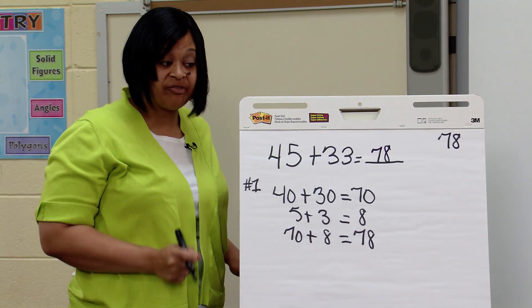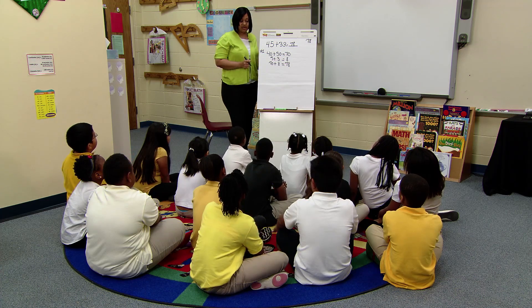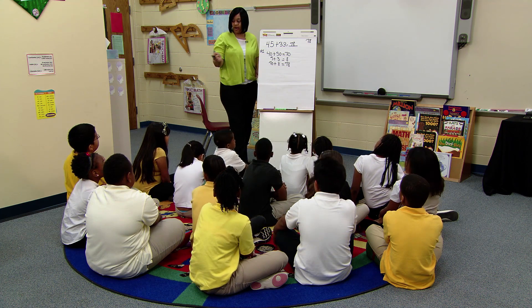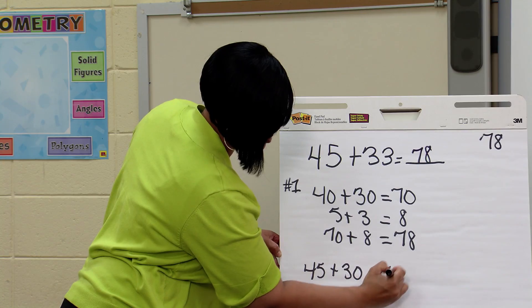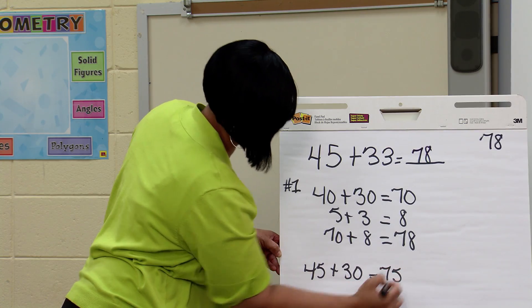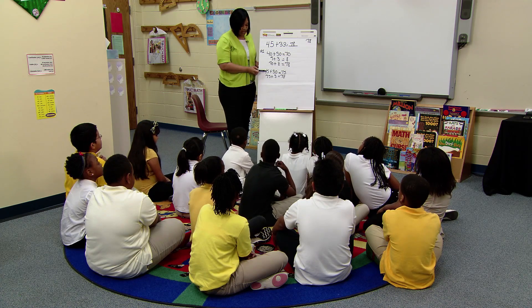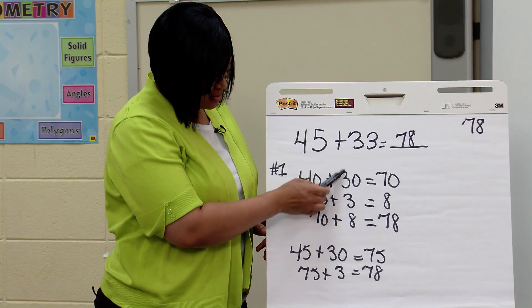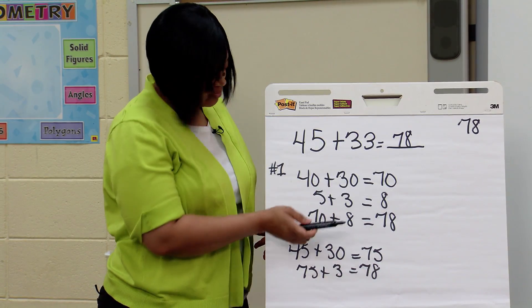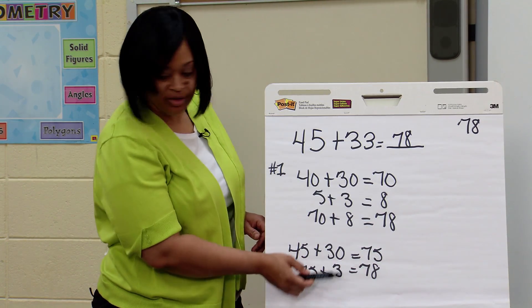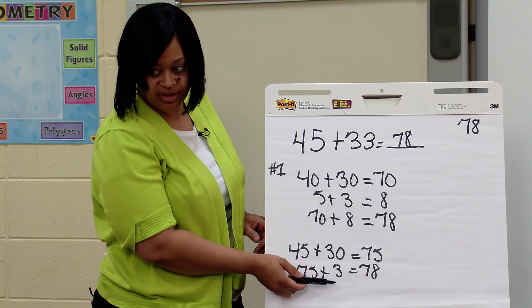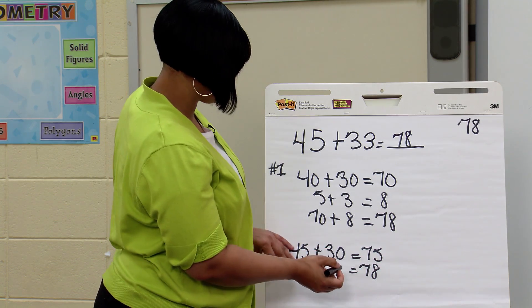Did anybody come up with a different strategy? Okay, Brian? I added 30 to 45 to make 75. Then I added 3 to 75 to make my answer 78. So you decided to take your 45, add the 30 out of 33, and then you added your 1. Very good. Good job.